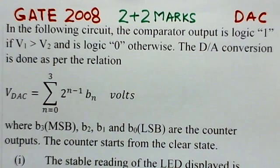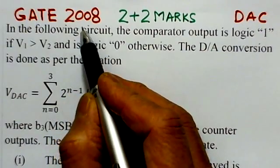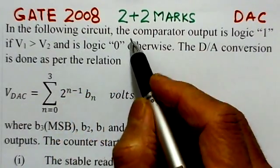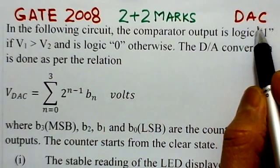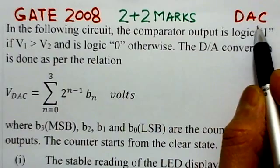This video solution is of the third problem on ADC and DAC. It is a linked answer type question. The problem is from GATE 2008, worth 2 plus 2 marks, and is based on digital to analog converters.